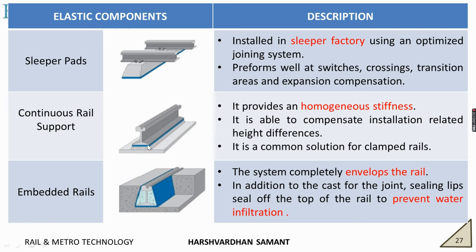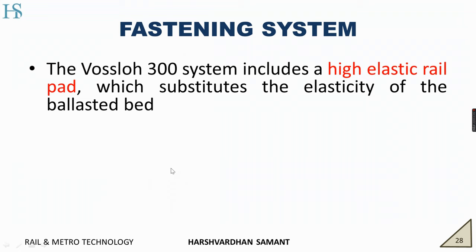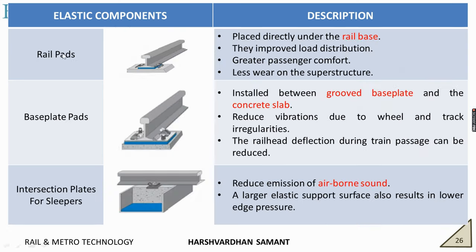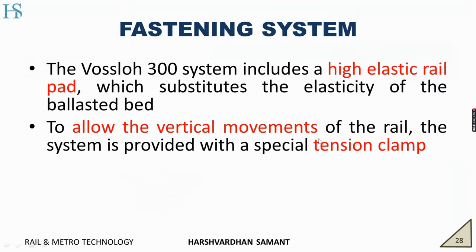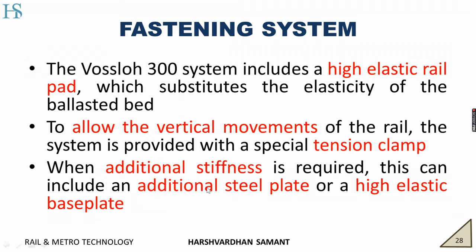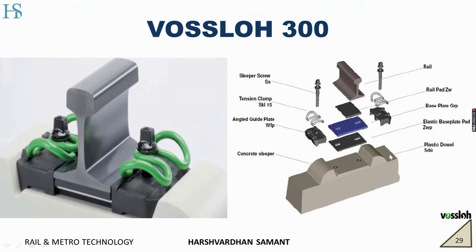In the last two methods of continuously supported rail, these rail supports are used. In embedded rail, it envelops the rail completely, providing a joint sealing for water, preventing water infiltration, as well as providing sound insulation. Coming to the fastening system: the Voslov 300 system is preferably used. It includes high elastic rail pads, which substitute the elasticity of the ballasted bed. To allow the vertical movements of rail, the system provides special tensioning clamps. Additional stiffness can be provided by using additional seal plates or a high elastic base plate. The components are: screw, spring-loaded element, tension clamps, concrete sleeper, elastic base plate, rail pad, and base plate grip.